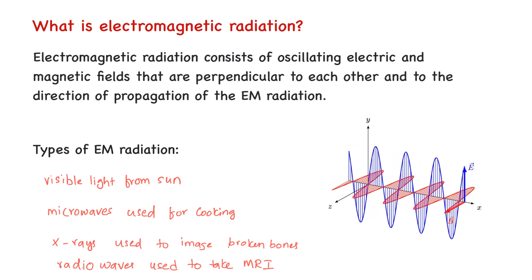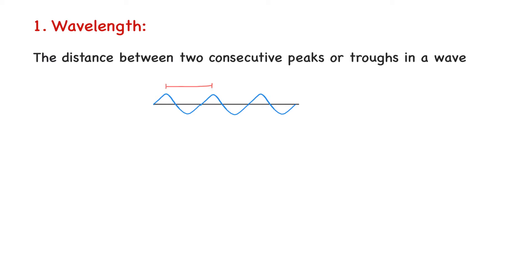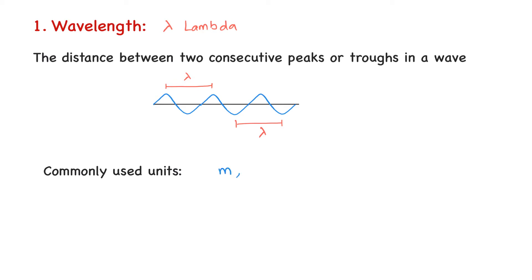There are three important characteristics that describe an electromagnetic wave. The first characteristic is called wavelength. The wavelength is defined as the distance between two consecutive peaks or troughs in a wave. Peaks are the highest points on a transverse wave and troughs are the lowest points. We represent wavelength by the Greek letter lambda. The most commonly used units to express wavelength are meters, nanometers, and angstroms. One angstrom is equal to 10 to the negative 10 meters, and one nanometer is equal to 10 to the minus 9 meters.